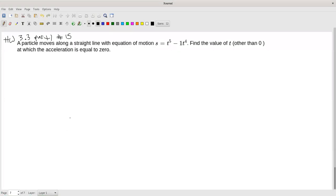We've got a particle moving along a straight line, and this describes its motion, its distance from the observer. We want to know what the acceleration is, find the value of t - at what time is the acceleration zero?